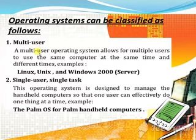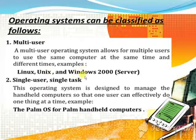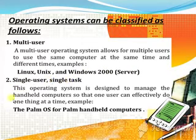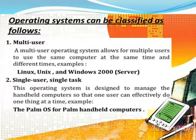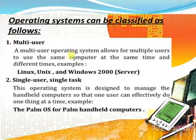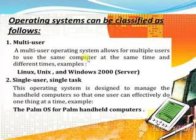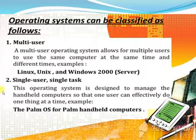Operating system is classified as follows. Multi-user: a multi-user operating system allows multiple users to use the same computer at the same time or at different times. Ek hee computer ko bahut saare log use kar sakte hain. Single user: this operating system is designed so that one user can effectively use one thing at a time. Single user ghar mein use hotay hain, aur multi-user offices mein, factories mein, schools mein.